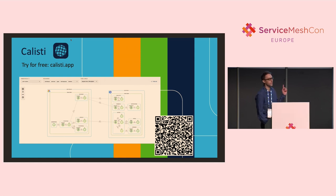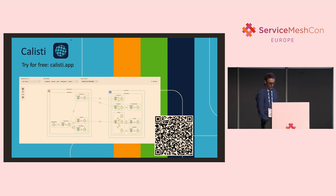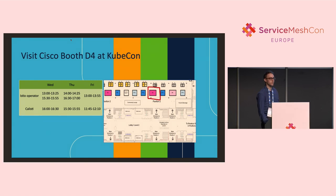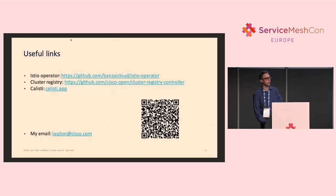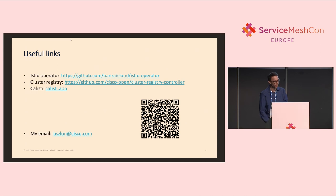If you want even more than a piece of cake and want it for free, you should try Cisco's product called Calisti, which, using these open-source tools, gives you a fully automatic multi-cluster experience with a nice UI and much more. If you're interested in our product or any of the open-source tools mentioned today, please visit the Cisco booth at KubeCon, or feel free to come chat with me here for a few more minutes if you're interested in how we bake this cake. Thank you very much for listening.